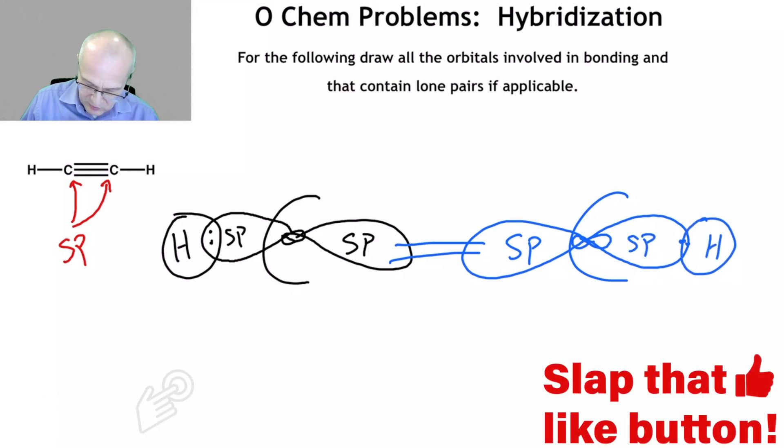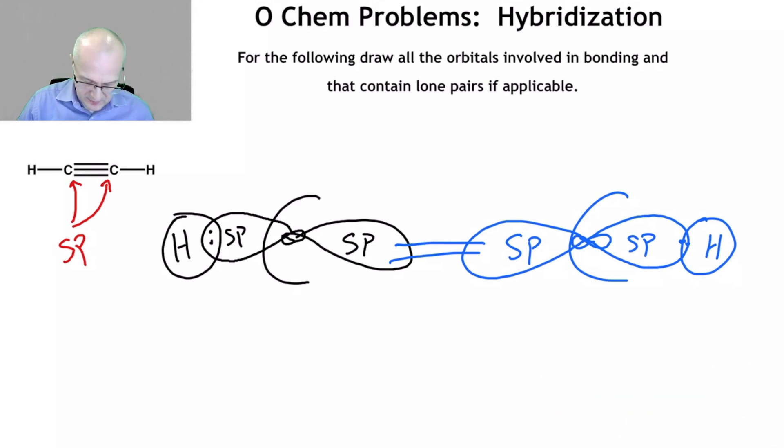Now I know this looks like two p orbitals coming head to head. It's not. This is one sp orbital. This is a second sp orbital. It is not one p orbital. I know it looks that way because the way it's drawn, but remember this is one orbital. This is a different orbital.